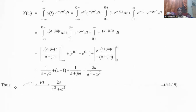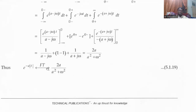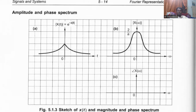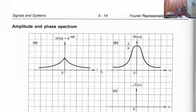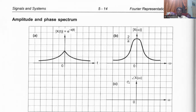Now, what is the magnitude spectrum? Since the result 2a/(a² + ω²) contains only a real term, even calculating the magnitude gives the same expression. The phase is zero for all values of omega, since there is no imaginary part — so tan inverse of imaginary part by real part is zero. The magnitude spectrum decreases from a peak and the phase spectrum is zero. By selecting a value of a and substituting different values of omega, we can plot both the magnitude and phase spectrum. That will be continued in the next class.